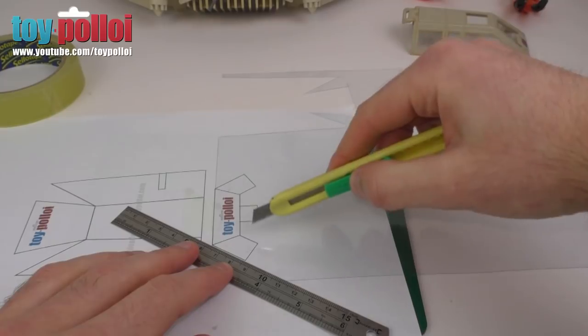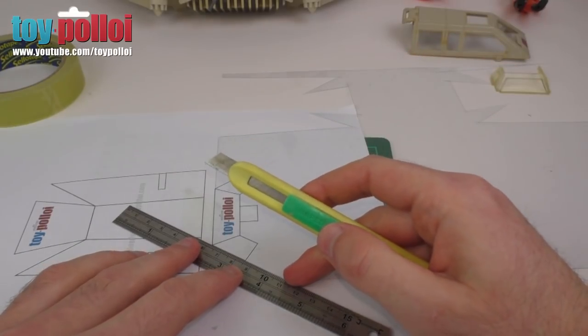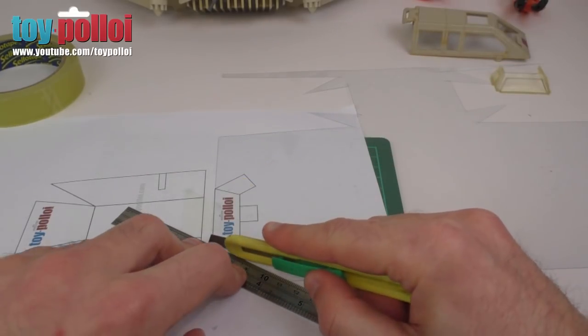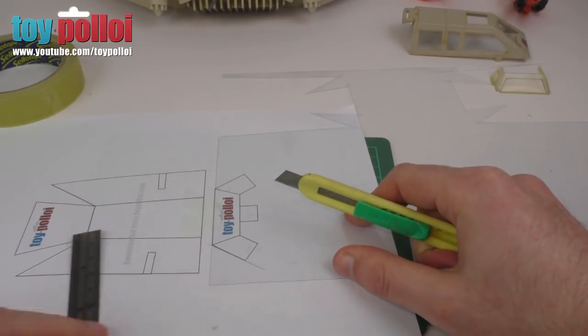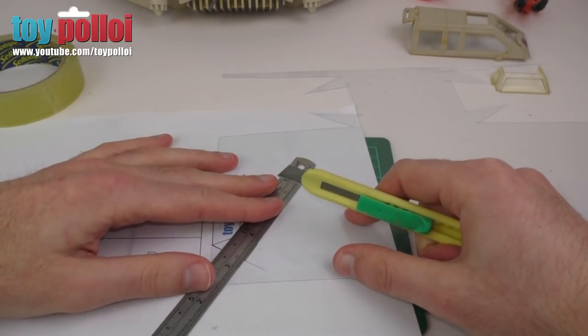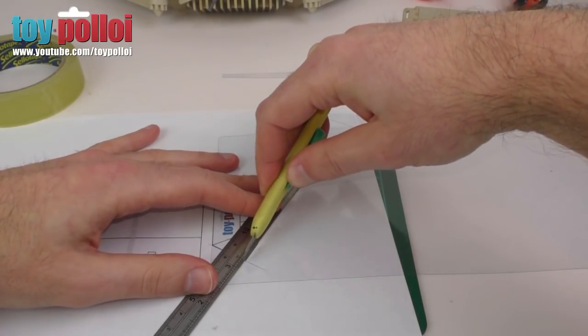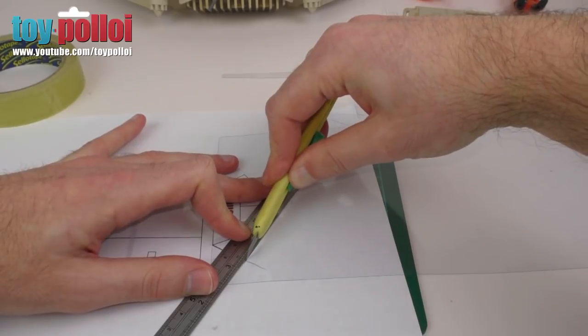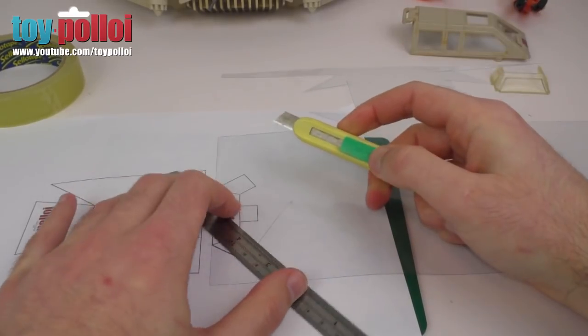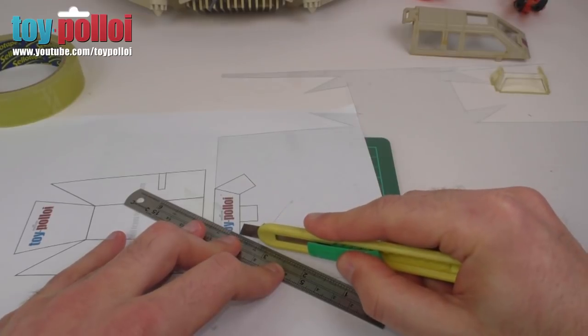Until we've got those cuts. I'll just carefully go through those, and as you can see, you can cut very easily just without pushing the blade particularly hard. It will cut straight through the acetate. So let's get this cut out and then I'll show you the next stage.